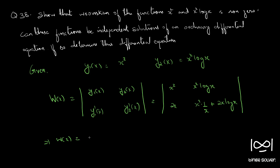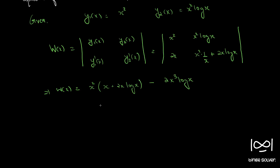Therefore, the Wronskian equals x²·(x + 2x·log(x)) minus 2x·(x²·log(x)). This gives x³ + 2x³·log(x) − 2x³·log(x), so the Wronskian equals x³.